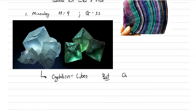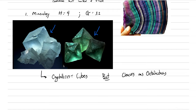Fluorite crystallizes as cubes but cleaves as octahedrons — this is super important. You need to train your brain: when you see clean octahedral shapes in clear, green, purple, or yellow specimens, those are probably cleavage fragments of fluorite. When you see cubic surfaces, those are growth features. Being able to recognize the difference between cleavage fragments and growth faces is tricky but will really help you identify fluorite.